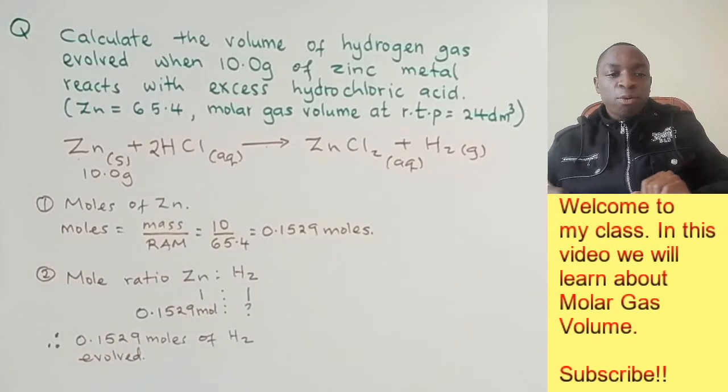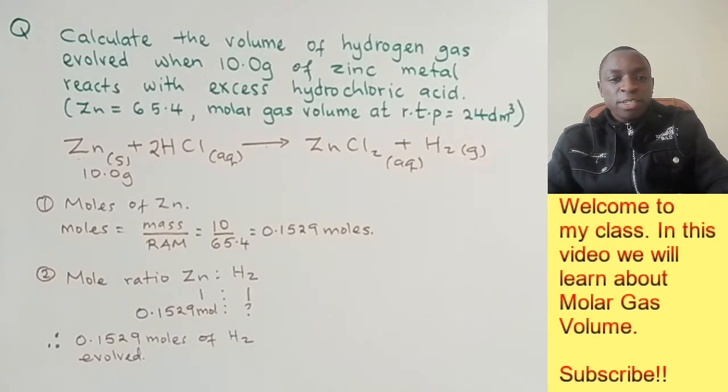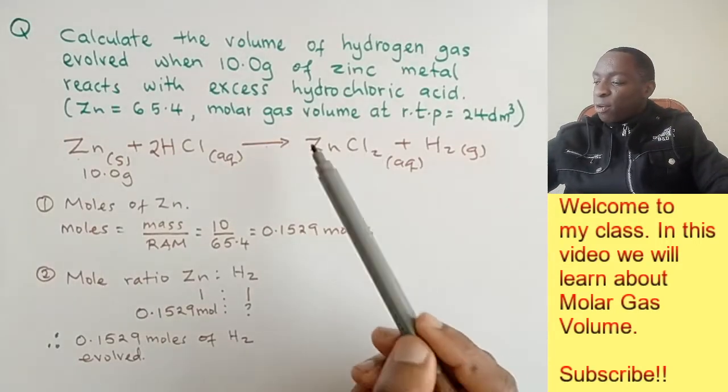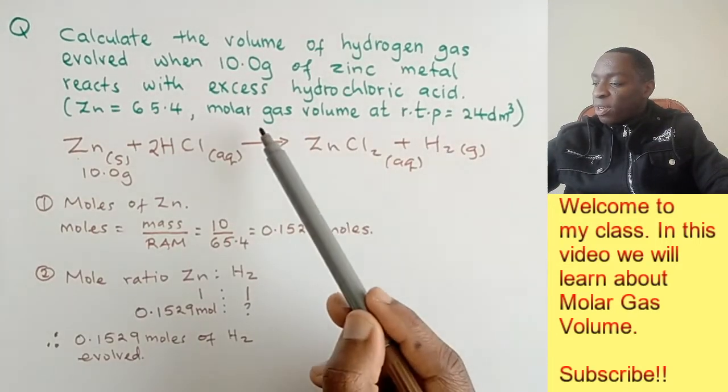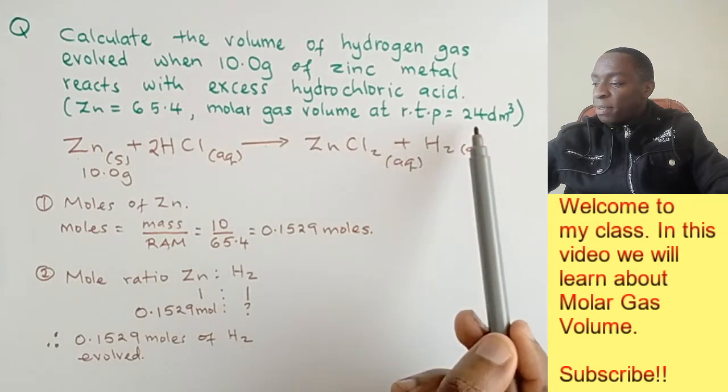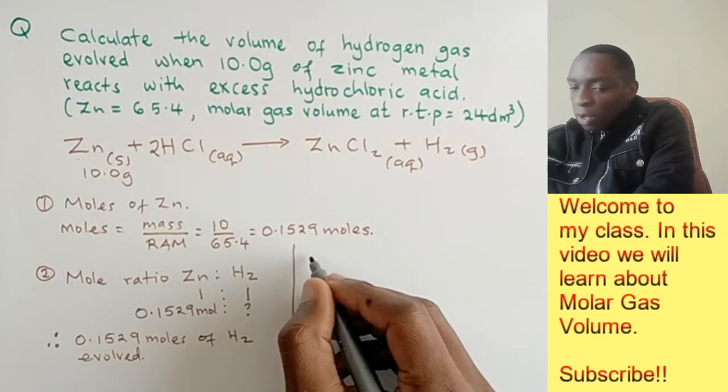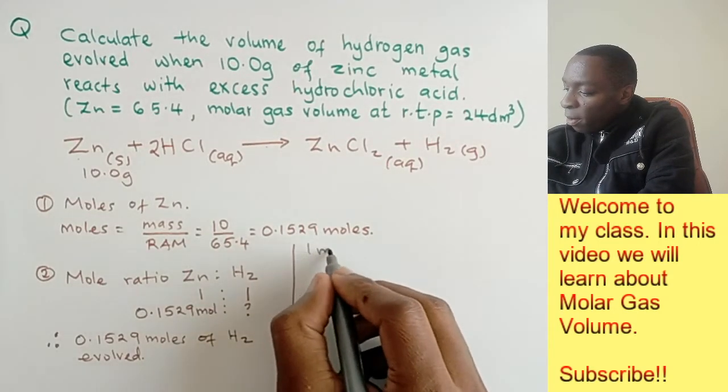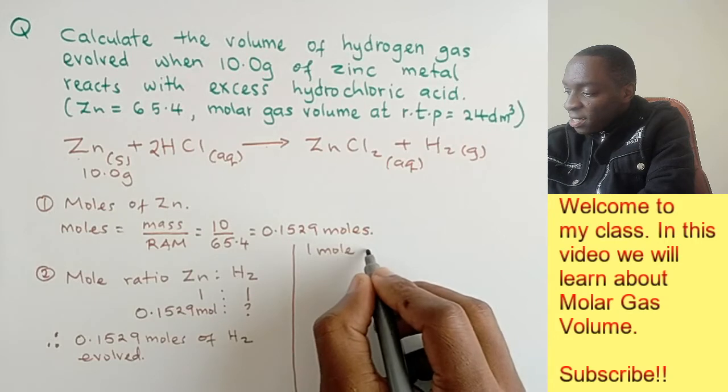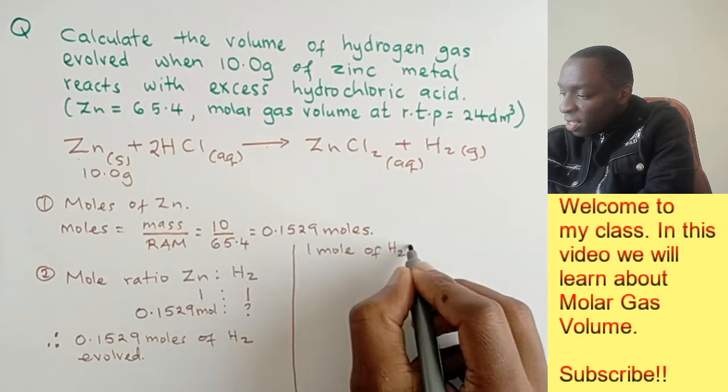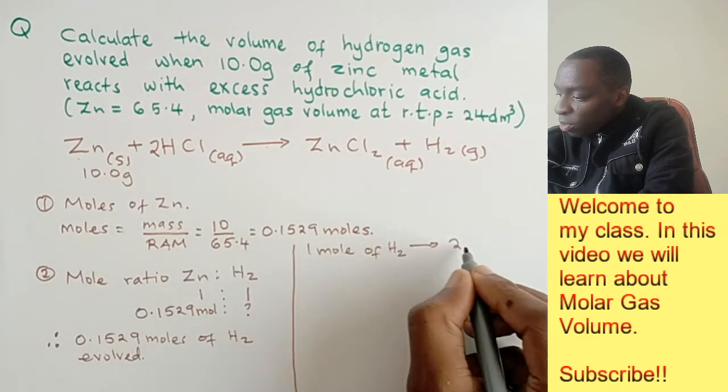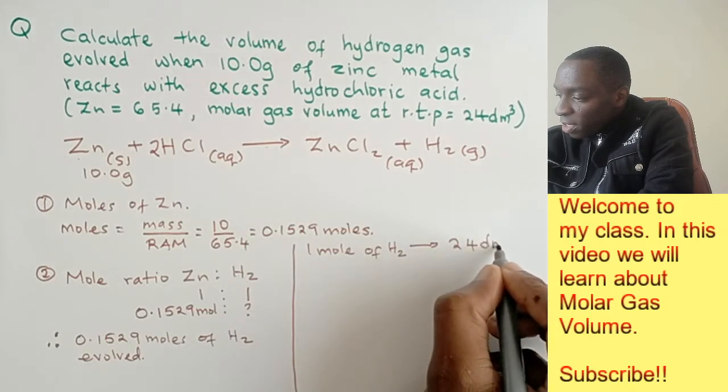Now that we have the number of moles of hydrogen gas that was evolved, the next thing is to calculate the volume of hydrogen gas. That's where molar gas volume comes in. We've been told that molar gas volume at RTP is 24 dm³. We say that 1 mole of hydrogen gas occupies 24 dm³.